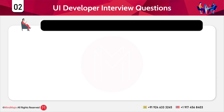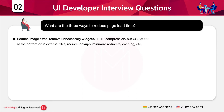The next question is: what are the three ways to reduce page load time? To reduce page load time, you can reduce image sizes, remove unnecessary widgets, and perform HTTP compression. Apart from this, you can put CSS at the top and script references at the bottom or in external files. You can also reduce lookups, minimize redirects, and minimize caching.